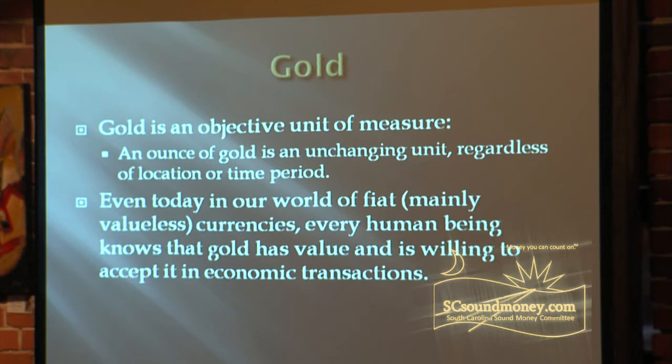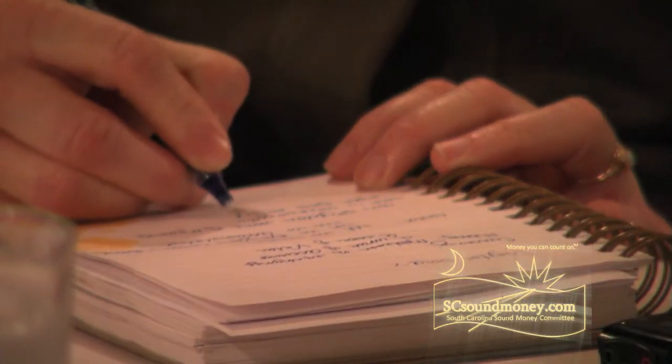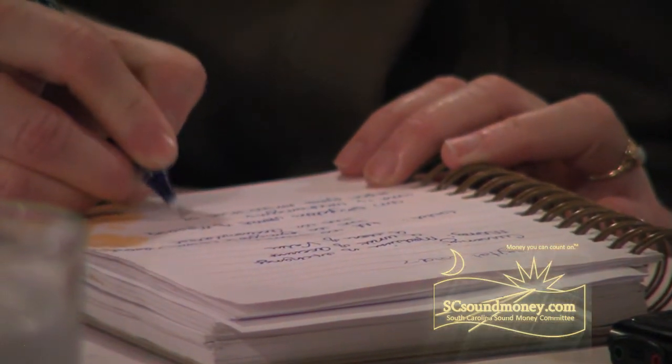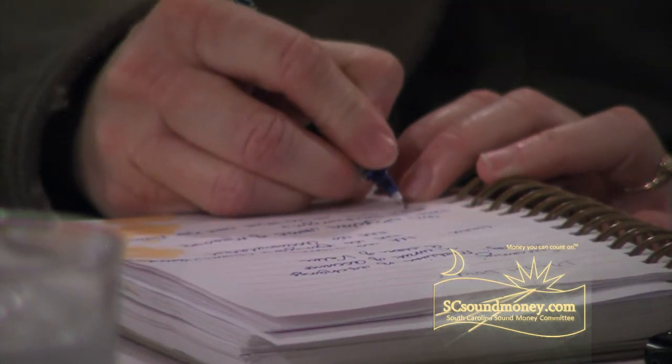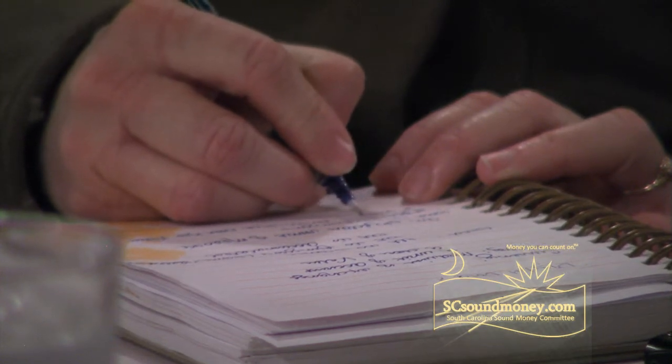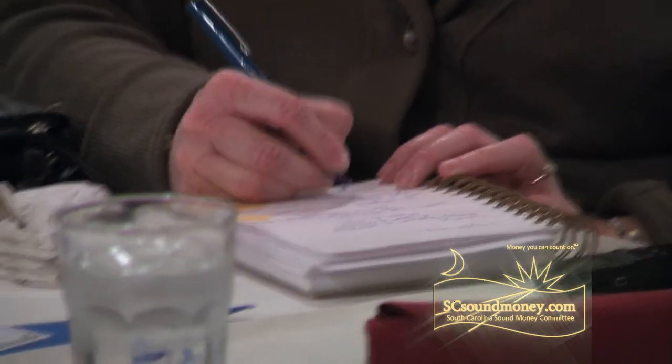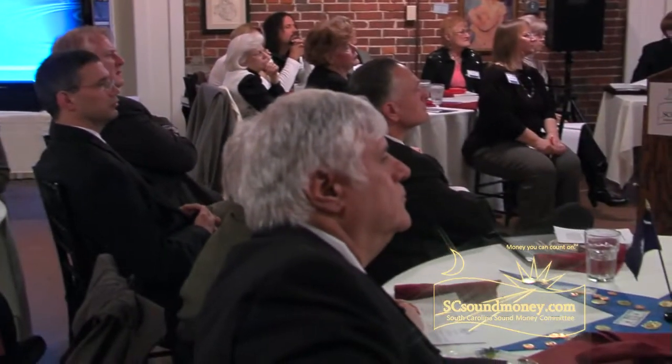But even today, in our world of fiat currencies, every human being, regardless of where they are, knows that gold has value and they're willing to accept it in economic transactions. For example, an ounce of gold today is about $1,350 an ounce. If I happen to owe somebody the equivalent of double that amount — say $2,700 — somebody painted my house and I need to pay them. I don't have that cash to hand, but I've got two one-ounce coins. Nine times out of ten, the guy's going to take it, because he knows he can get something with it — turn it into cash, turn it into whatever else he wants.